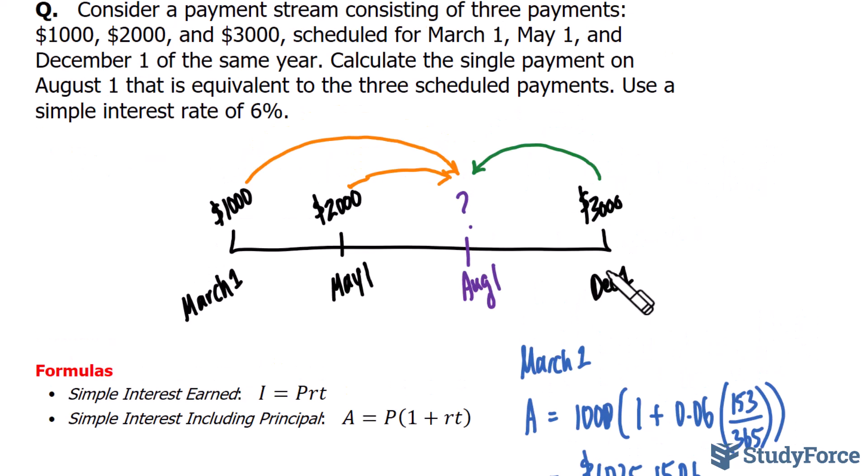Now, as I mentioned, December occurs in the future relative to August 1st. So, we have to discount 3,000 back to August 1st. Because this is a future value relative to the focal date, that will be our value of A. So, in place of A, we'll write down 3,000. And what we're looking for this time is P.